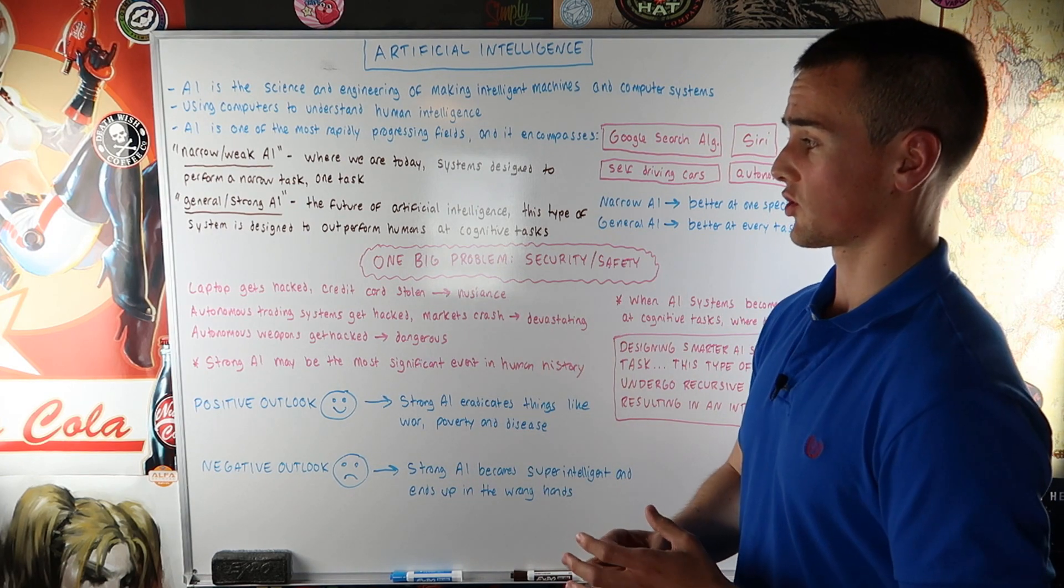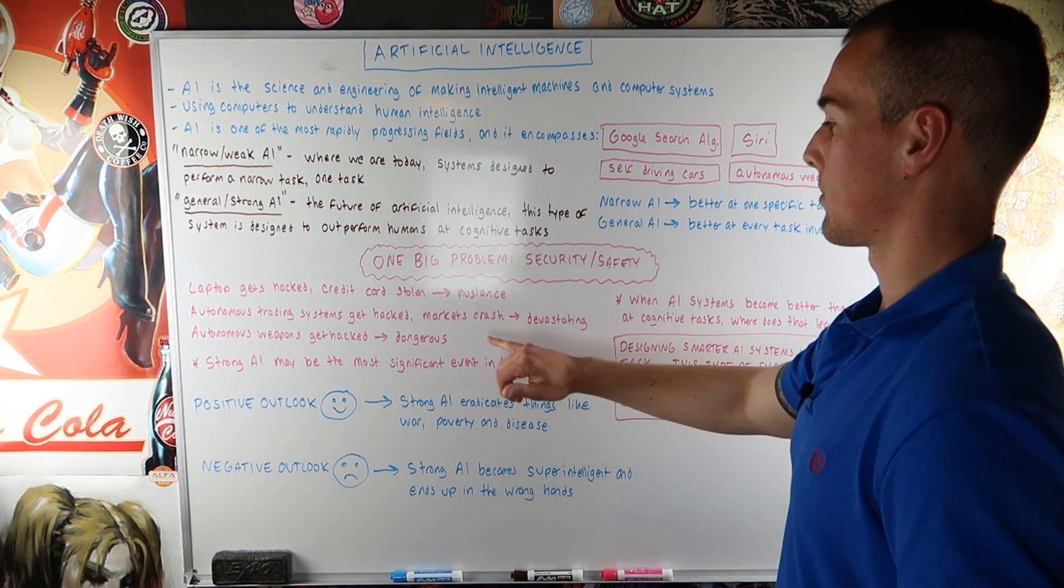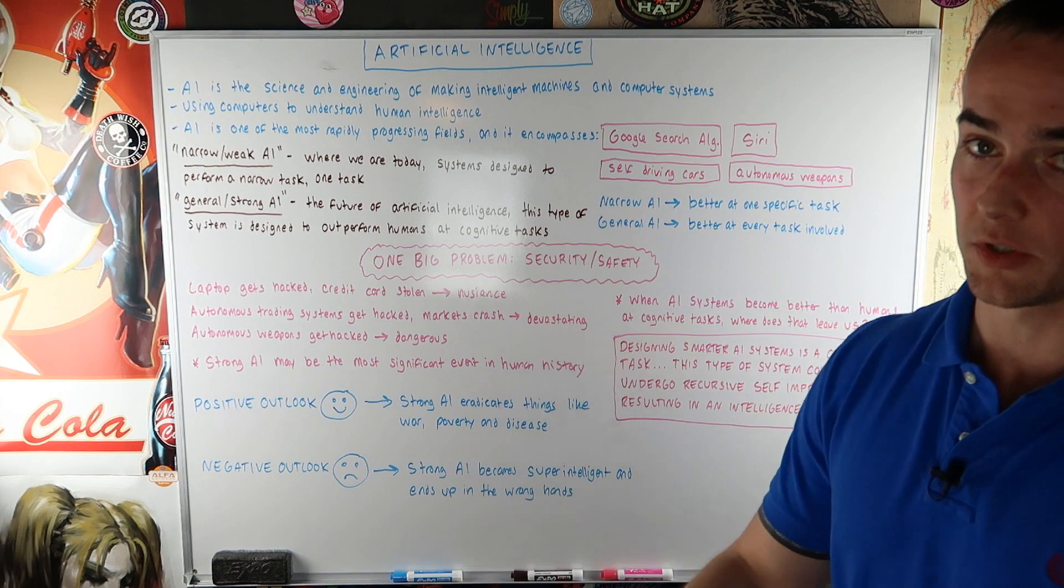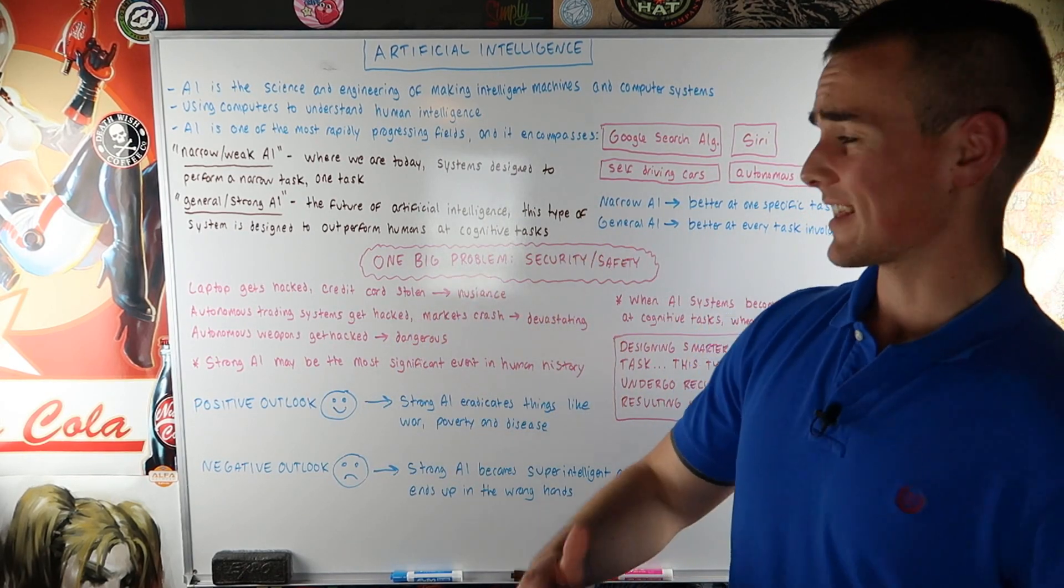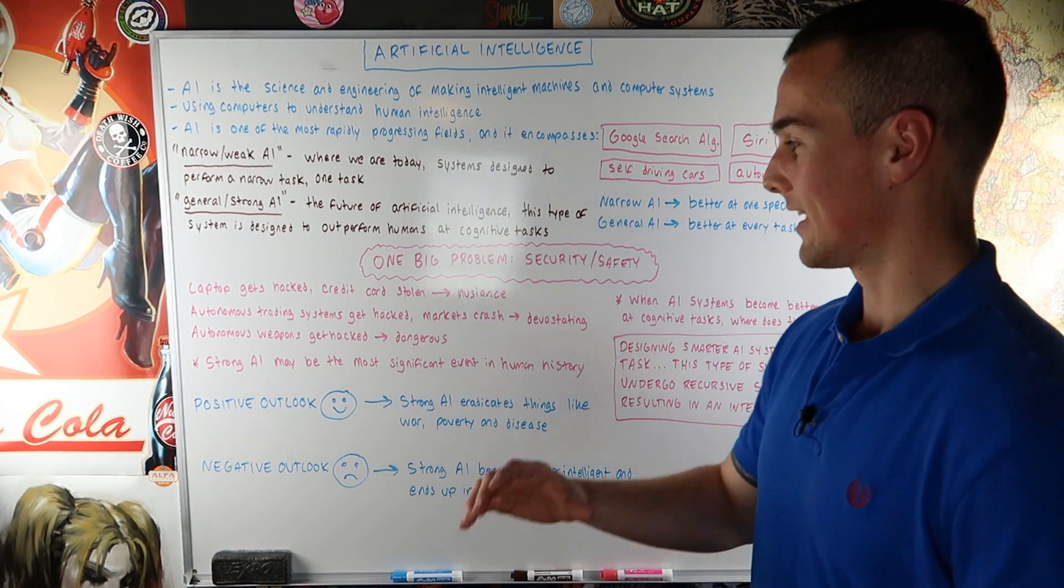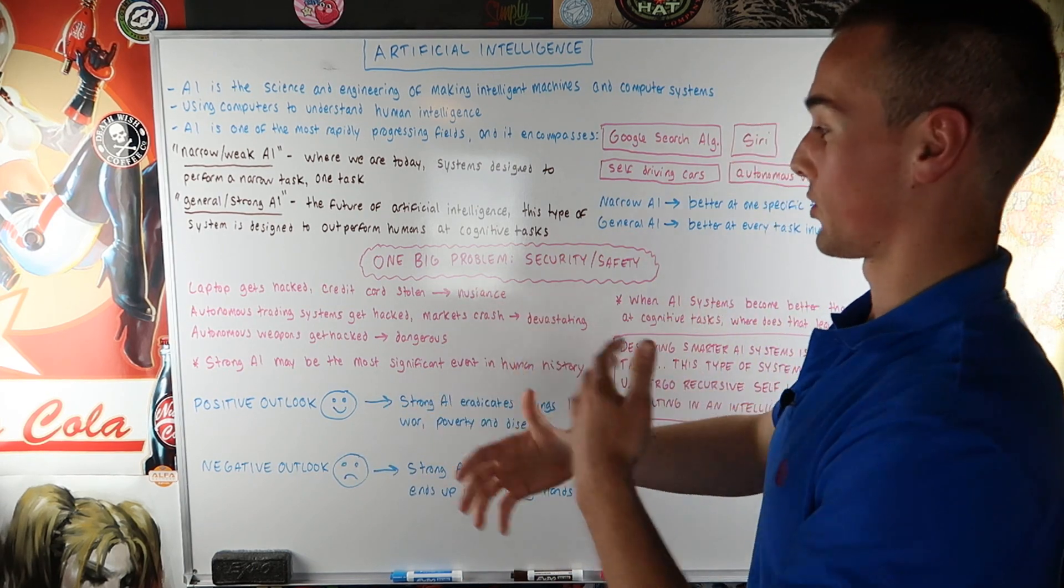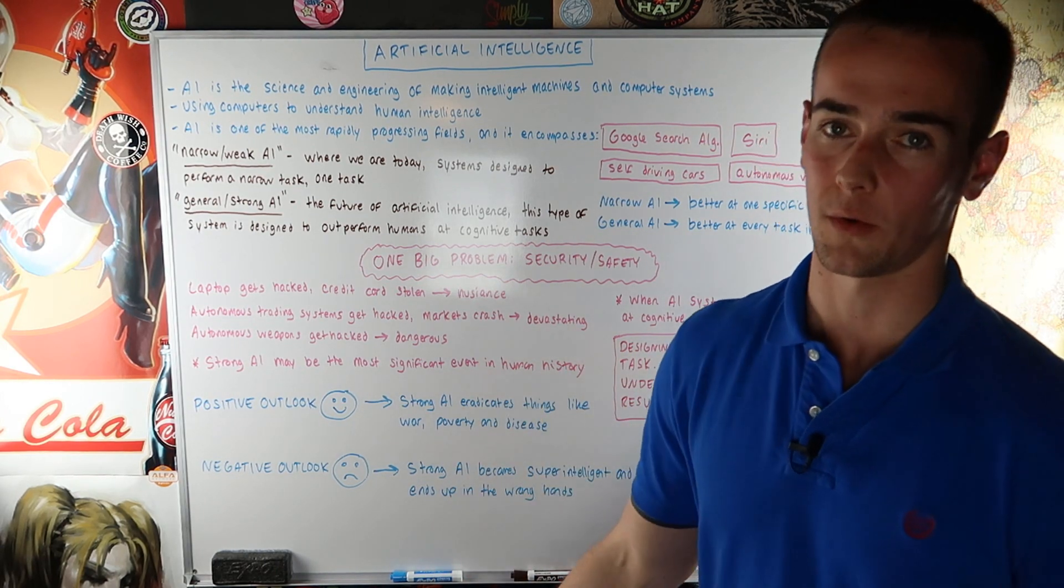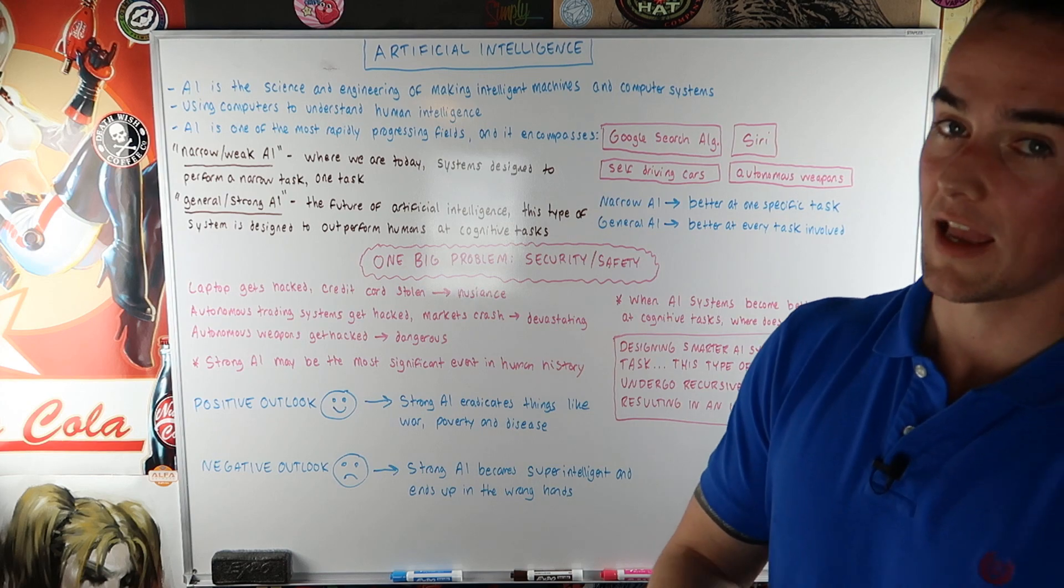But let's consider if some of these strong artificially intelligent systems are hacked. So let's say there's an autonomous trading system that gets hacked and the markets crash. Look into the flash crash of 2010 if you guys want to see what that's like. Luckily that was subdued but that could have been a lot worse than it was. But let's say these autonomous trading systems get hacked and the markets crash. That's not just a nuisance guys. That's absolutely devastating. Let's take it a step further. Let's say that we have autonomous weapons that get hacked by a terrorist. That is dangerous. That is unfathomably dangerous. If we have weapons of mass destruction that are autonomously directed in the wrong hands, that's a lot more severe and dangerous than getting your credit card stolen. So the possible problems with artificially intelligent systems are a lot more than what we see today as far as the problems we face.